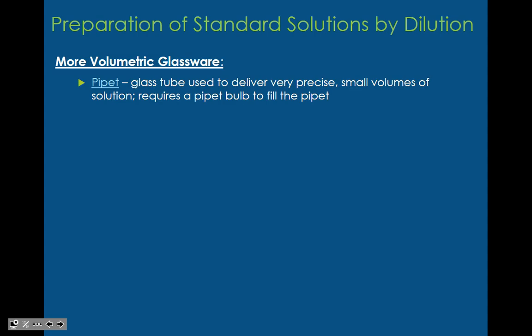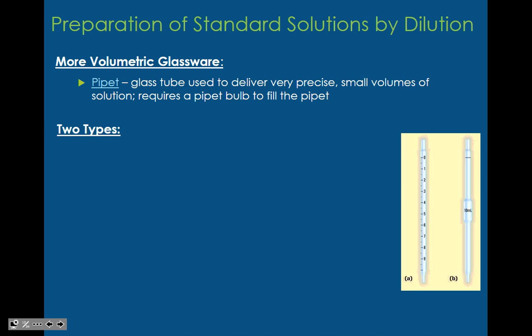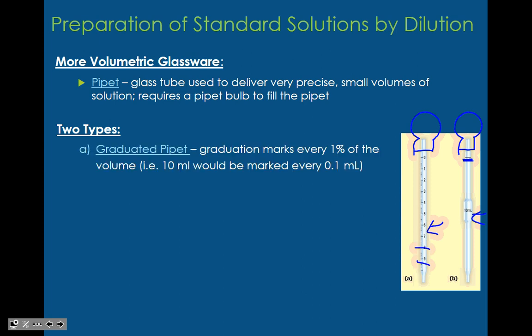Let's look at the glassware used for dilutions. A pipette is a glass tube used to deliver very precise small amounts of solution and requires a pipette bulb to fill it — like a turkey baster, you suck up the amount. A volumetric pipette has only one reading line. A graduated pipette marks every 1% of the volume; a 10 milliliter graduated pipette is marked every 0.1 milliliters. It can transfer any volume from 1 to 100%, and is precise to plus or minus 0.1 milliliters.